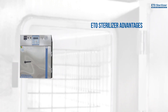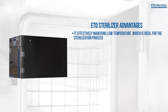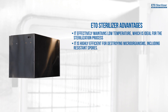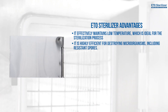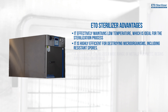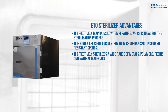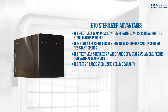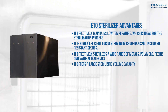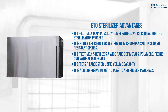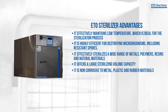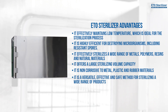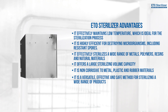ETO sterilizer advantages: It effectively maintains low temperature, which is ideal for the sterilization process. It is highly efficient for destroying microorganisms, including resistant spores. It effectively sterilizes a wide range of metals, polymers, resins, and natural materials. It offers a large sterilizing volume capacity. It is non-corrosive to metal, plastic, and rubber materials. It is suitable for humidity-sensitive devices too. It is a versatile, effective, and safe method for sterilizing a wide range of products.